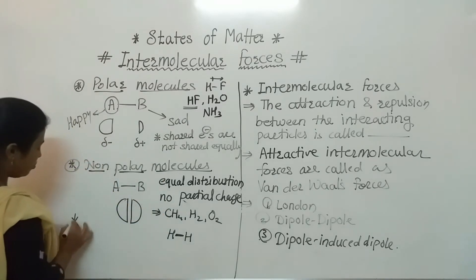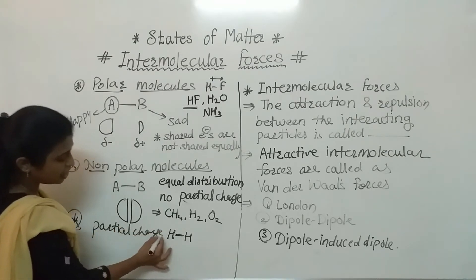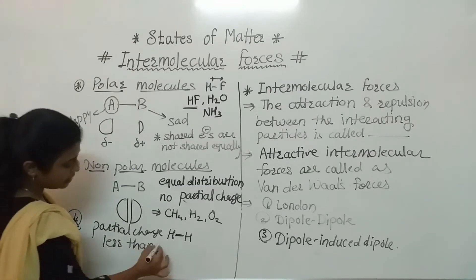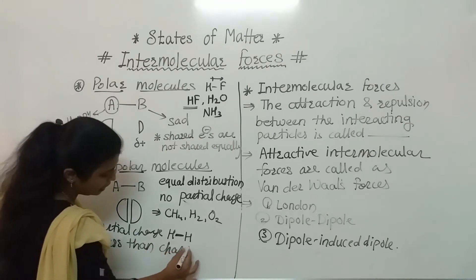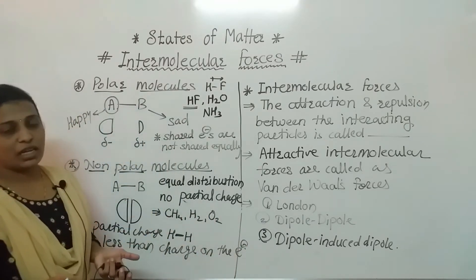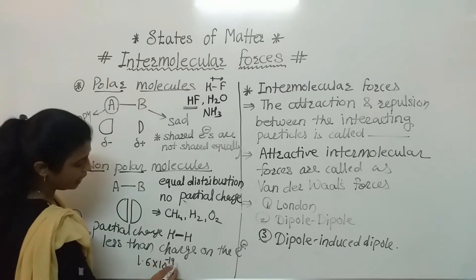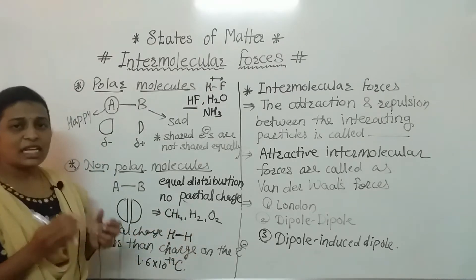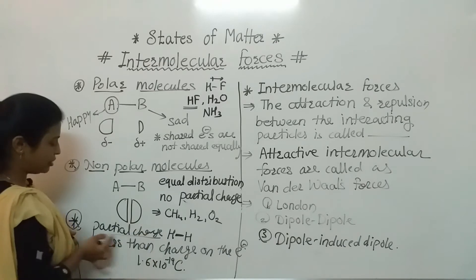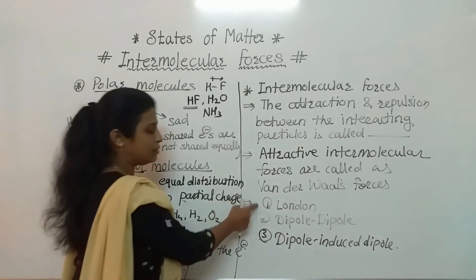Partial charge is nothing but a charge less than the charge on an electron. The charge on an electron is 1.6 × 10⁻¹⁹ coulombs. When the charge is less than 1.6 × 10⁻¹⁹ coulombs, it is called a partial charge. We have now completed the required information to understand these three concepts. When a polar molecule is present, there is a permanent dipole moment.